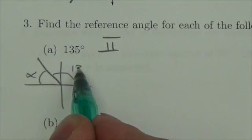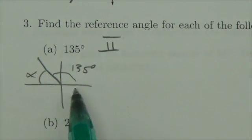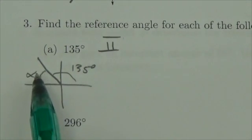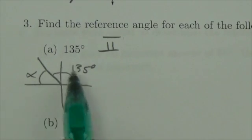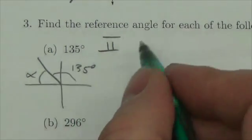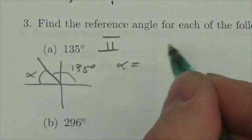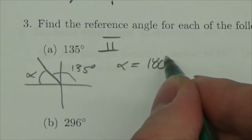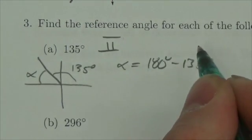So if this is 135 degrees, you can even just see the relationship here. 180 minus this angle right here is 135. Or another way to think about it is alpha, the reference angle, will be 180 degrees minus 135 degrees.